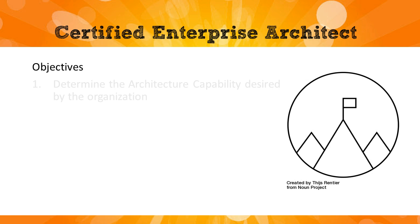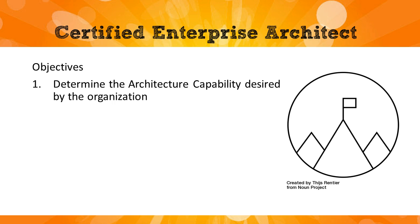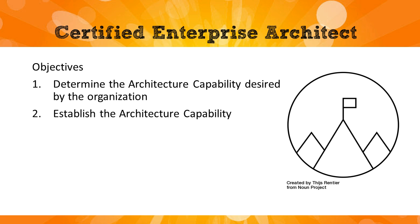The objectives of this phase are: one, determine the architecture capability desired by the organization. You may be just getting started with formal enterprise architecture, and in this phase you pick a point in the future where you want more advanced architecture capability — maybe a larger team, better governance structure, better processes. The second objective is to establish that architecture capability, with organizational support to make the changes needed.